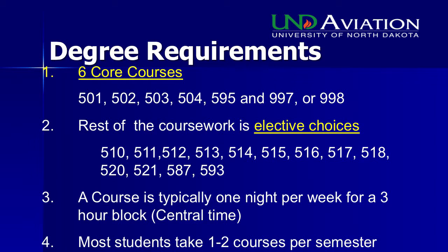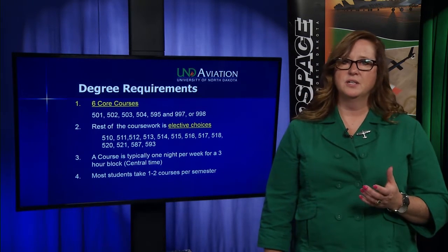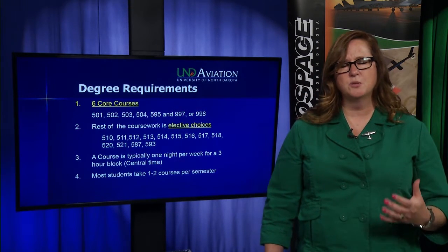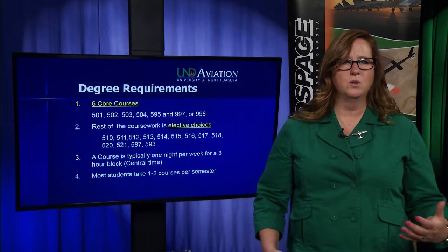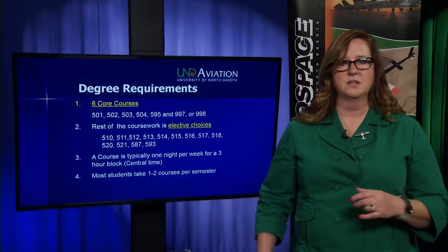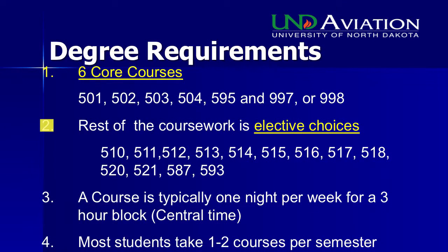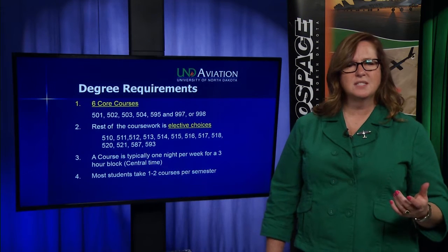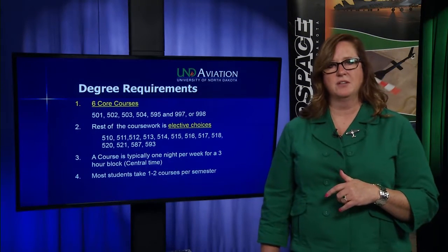If admitted, you'll complete six core classes — listed by their course numbers in the catalog. The 997 or 998 course is either independent study or your thesis, which you'll choose as you move through the program. The rest of the coursework consists of electives at the 500 level. All coursework in the Master's must come from 500-level courses; we don't accept undergraduate coursework in the master's degree program.